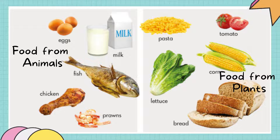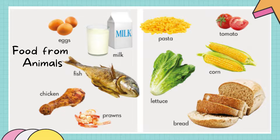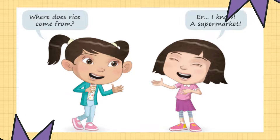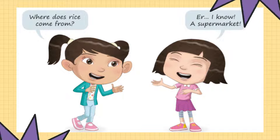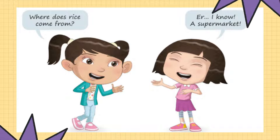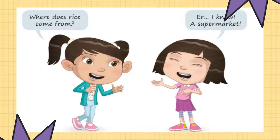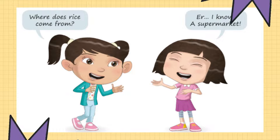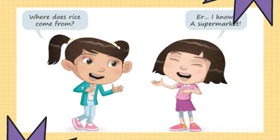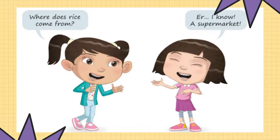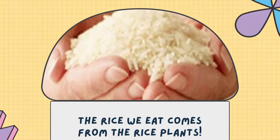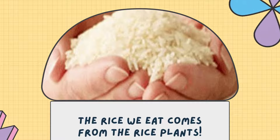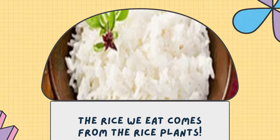I know that you all like to eat rice. Where does rice come from? Look at Aisha and Lily. Aisha is asking Lily where does rice come from. What was the answer of Lily? She said from the supermarket. Do you agree with her? Yes, we know that we can buy it from the supermarket, but it doesn't come from the supermarket. So the rice we eat comes from rice plants.